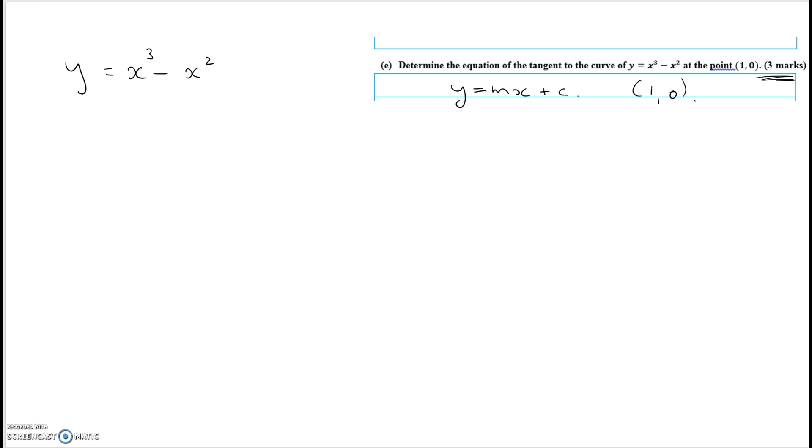So to find the equation of the tangent, you need to first find the slope equation first. And we need to find that when x equals 1, the slope is m, which in this case is 3 minus 2, which is 1.